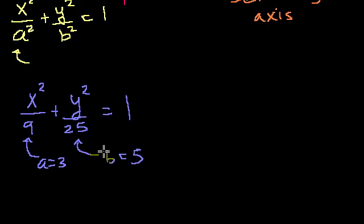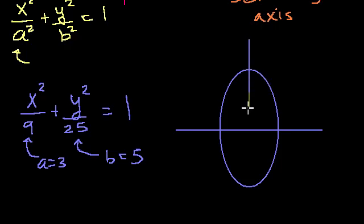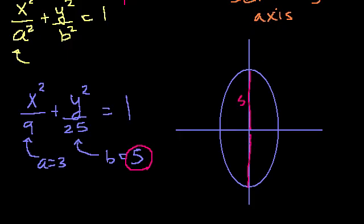The radius in the y direction is larger than in the x direction, so the ellipse is going to be taller and skinnier. The radius in the y direction is 5 (both top and bottom), and the radius in the x direction is 3 (both sides). You have now plotted this ellipse.